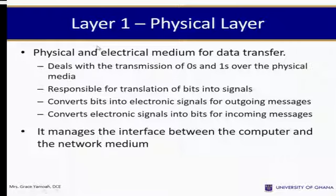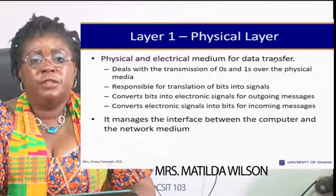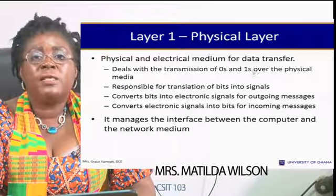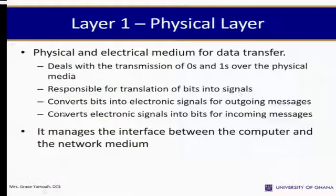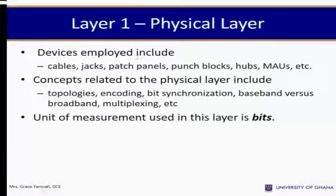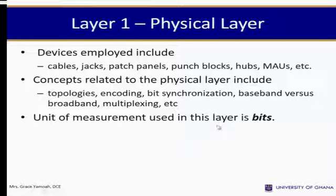Layer 1 is the physical layer — the physical and electrical medium for data transfer. It deals with the transmission of zeros and ones over the physical media (bits). It is responsible for translation of bits into signals: converting bits into electronic signals for outgoing messages and electronic signals into bits for incoming messages. It manages the interface between the computer and the network medium. Devices include cables, jacks, patch panels, punch boards, and hubs. Concepts include topologies, encoding, synchronization, and baseband versus broadband. The unit of measurement is bits.